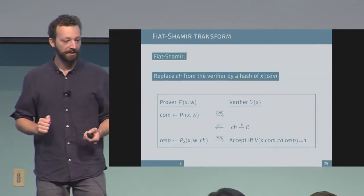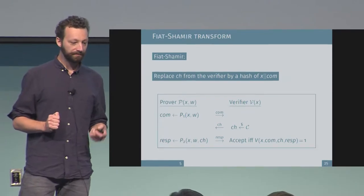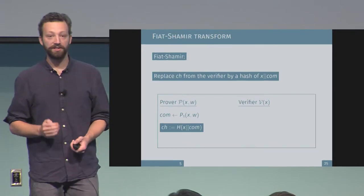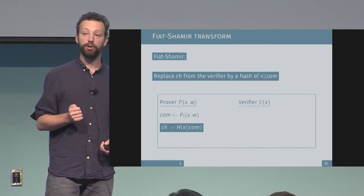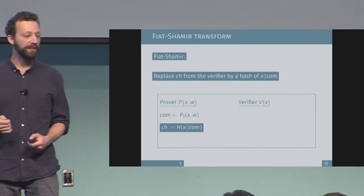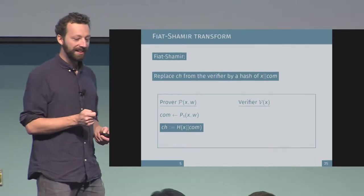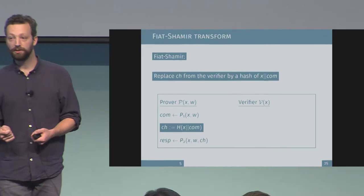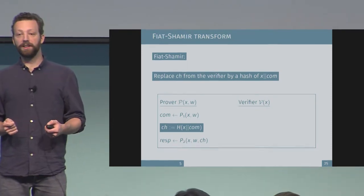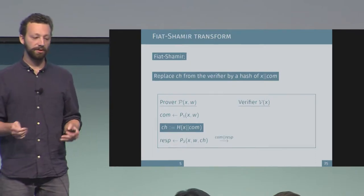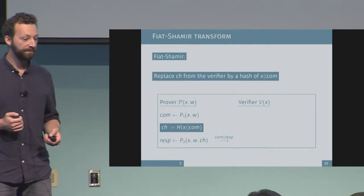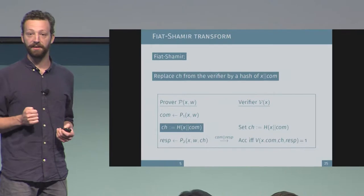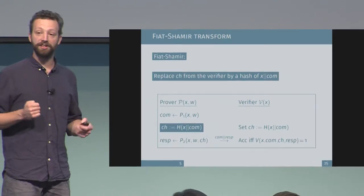The Fiat-Shamir transform takes away the interaction by replacing the verifier's challenge with the hash of X and the commitment, which the prover can compute by himself using a publicly known hash function. The main point is that it must be the same hash function known to all parties, which the prover then uses to compute a response. The prover sends the commitment and response together as the non-interactive proof. To verify, the verifier recomputes the challenge himself by evaluating the same hash function and checks whether the proper relation holds.